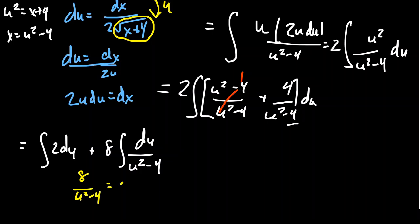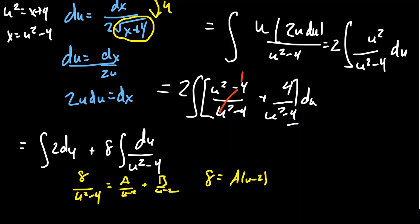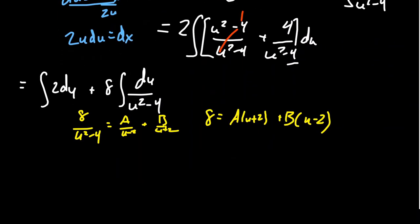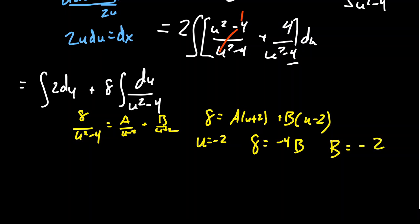Clearing the denominator gives 8 = A(u+2) + B(u−2). Plugging in u = −2 annihilates A and gives 8 = −4B, so B = −2. Plugging in u = 2 annihilates B and gives 8 = 4A, so A = 2.